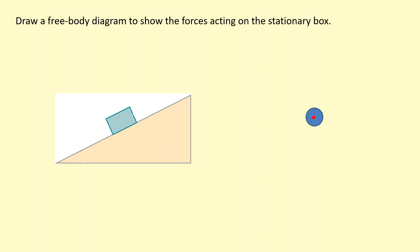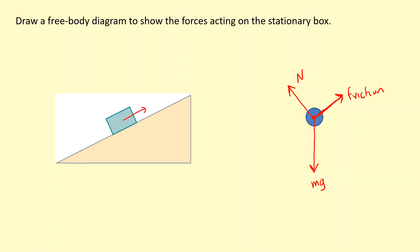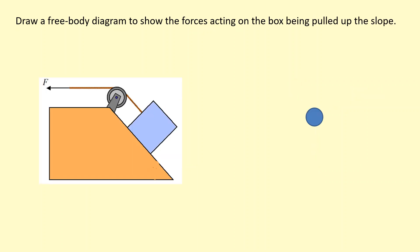Here we have a box on a slope that's stationary. First we have the weight of the box mg, and then the normal reaction force from the slope surface, N. Because these two alone won't balance — there would be an overall force along the slope — there needs to be another force, which is friction from the surface. Friction acts along the surface, preventing the box from sliding down, so it acts up the slope.